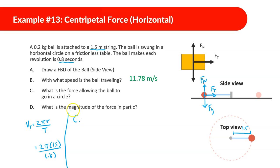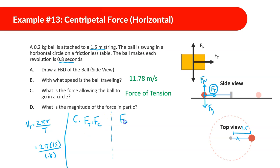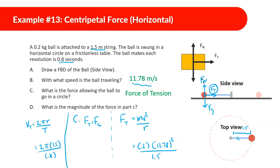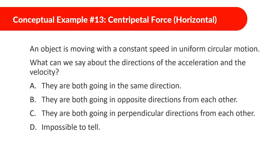What is the force allowing the ball to go in a circle, and what is its magnitude? The force of tension — without the string the ball would fly off. Tension equals the centripetal force, which equals mv² over r. Plugging in: m = 0.2, v = 11.78, r = 1.5. Calculating: 11.78 squared times 0.2 divided by 1.5 gives 18.5 newtons.